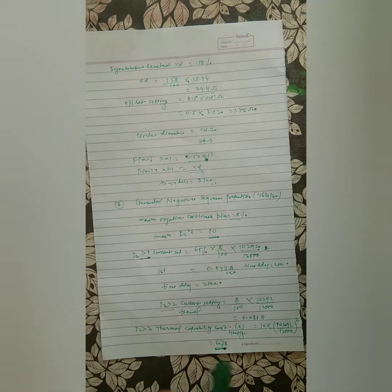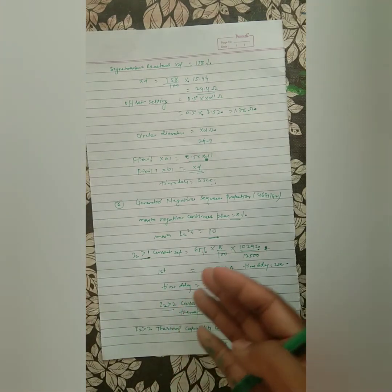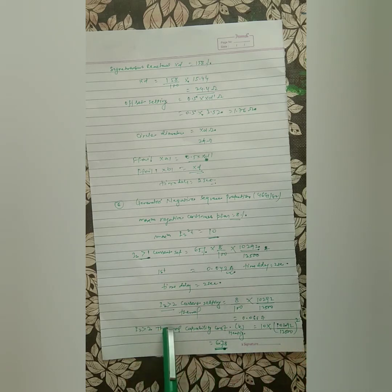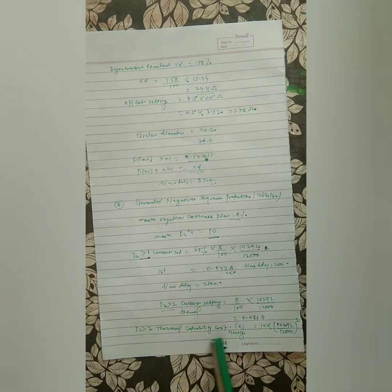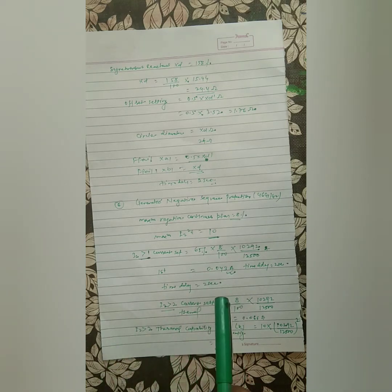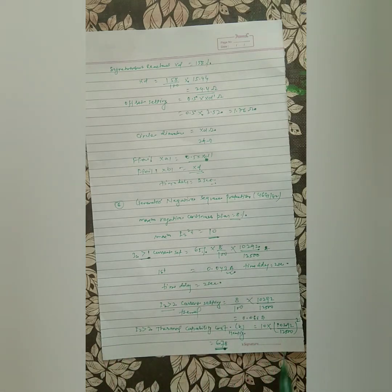If you go into the Mycom generator protection relay, you can see the parameters such as I2² and the thermal capability constant, and understand why they are calculated and how they are set in the relay. You can refer to the manual for detailed guidance.